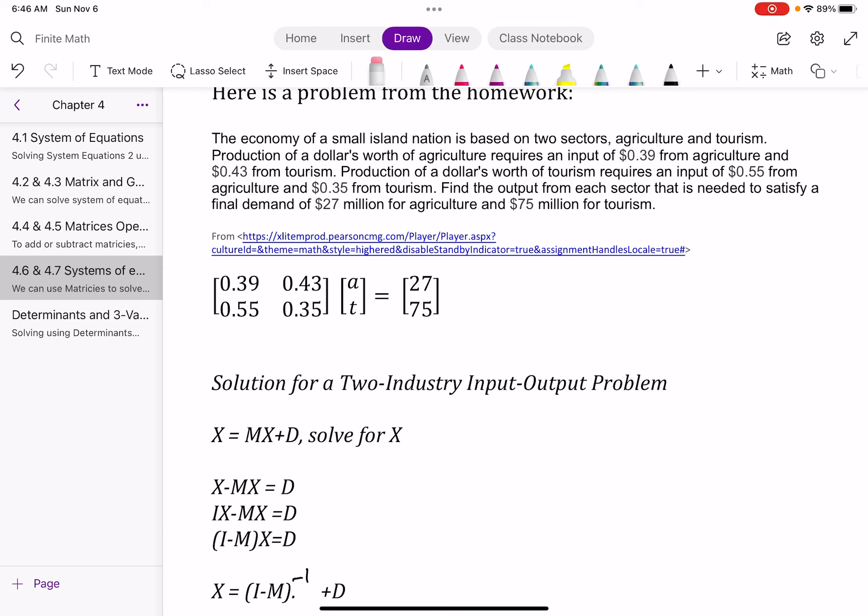All right. So X is our output, our total output. MX is our internal demand. And D is our final demand. Right? And so if I take my internal demand, and I add to my final demand, I will get my total output.